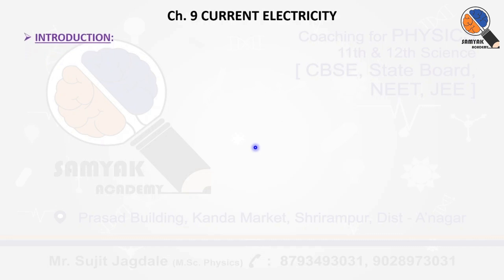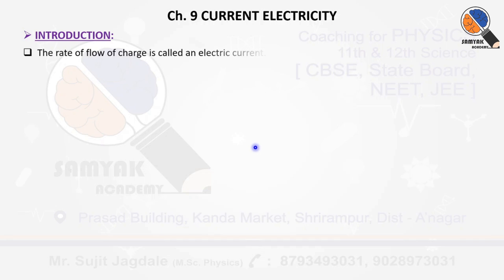Now in this lesson we are going to start with the concept of current. You should know about the current, then only we are able to study current electricity. You already learnt in 9th or 10th standard that whenever electrons or charges flow from one end of a conductor to another end, then only current will be created.